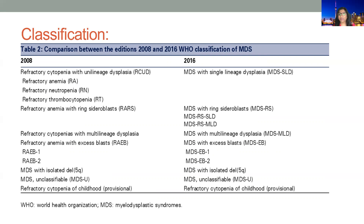There are changes from the 2008 to 2016 WHO classification of MDS. In 2008 we used the word 'refractory' plus a modifier, but that word is now replaced with 'MDS' plus a modifier. For example, if there is single lineage dysplasia, we now say MDS with single lineage dysplasia. If multiple lineages are involved, it is multilineage dysplasia. In between, there can be MDS with ring sideroblasts, with single or multilineage dysplasia depending on lineages involved.